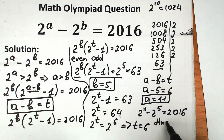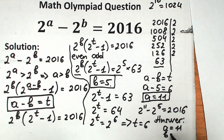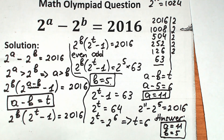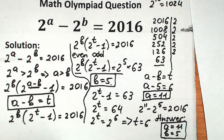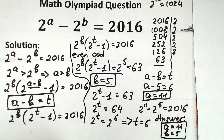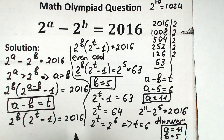Our answer is A equals 11 and B equals 5. This is the solution to this tricky challenge. I hope you understand my explanation and learned something new — that's my main goal on this channel. Don't feel bad if you got this wrong; I have many helpful videos available. Thank you for your likes, comments, and support — it inspires me a lot. Wish you all the best and see you in the next video.